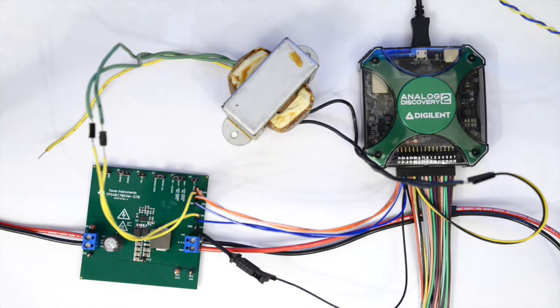Here is our test setup. We are using the TPS40170 EVM from Texas Instruments. It already has a resistor inserted to measure the loop gain, which is connected between these test points. I've soldered headers to these test points to connect the Analog Discovery 2 and the injection transformer.